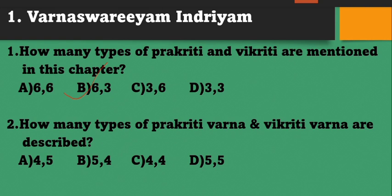How many types of Pragridhi Varna and Vigridhi Varna are described in this chapter? Options: A) 4,5; B) 5,4; C) 4,4; D) 5,5. The types of Pragridhi Varna are 4: Krishna, Shyama, Shyamavadada, and Avadada. The Vigridhi Varna are of 5 types.